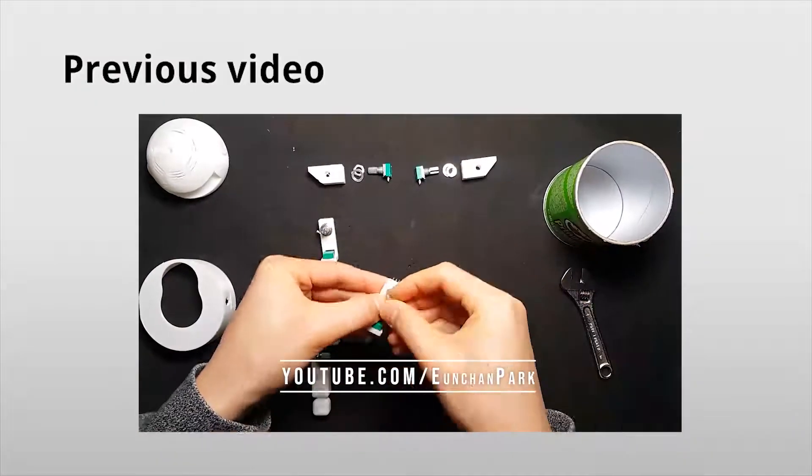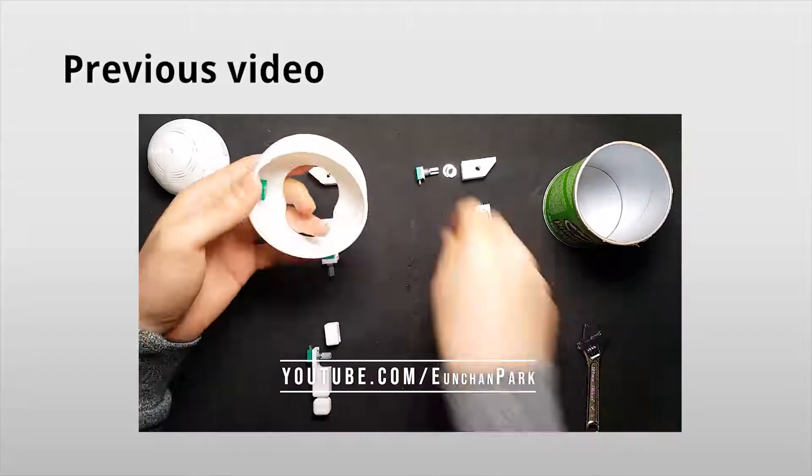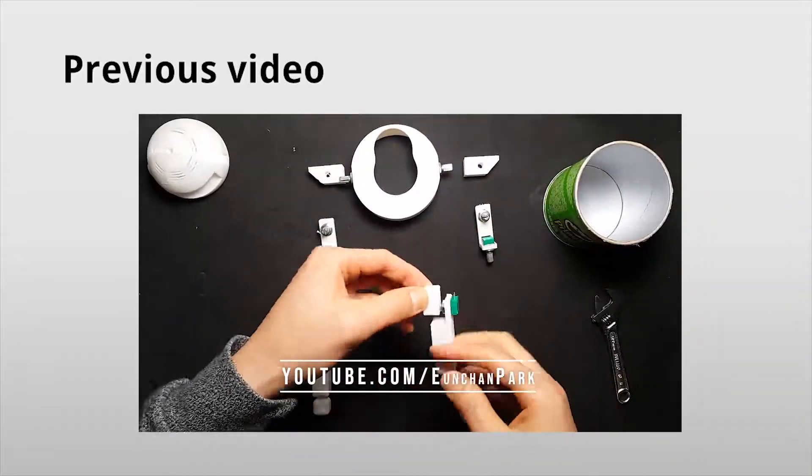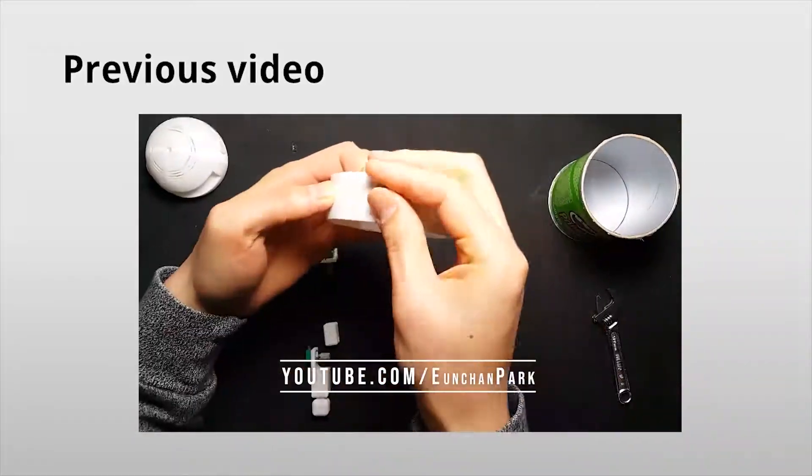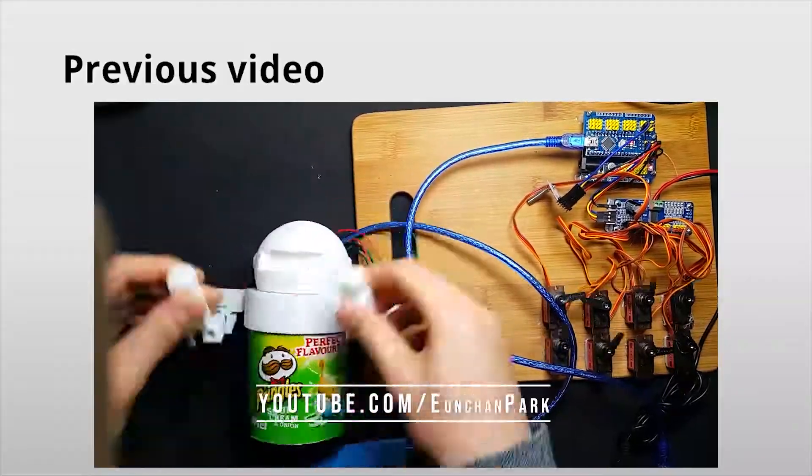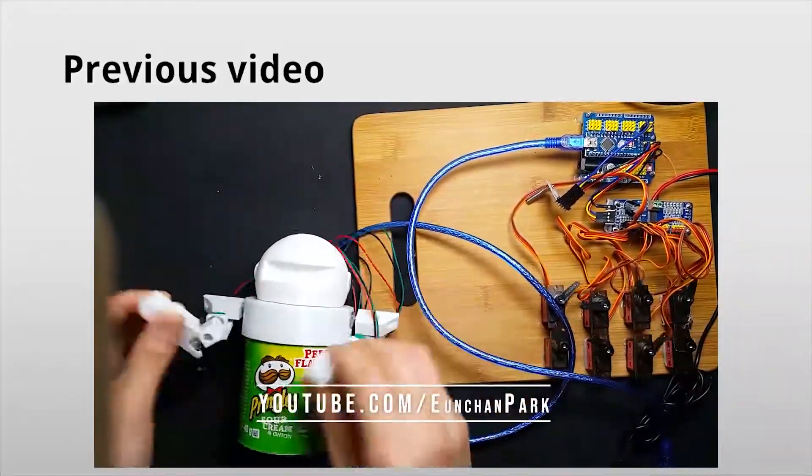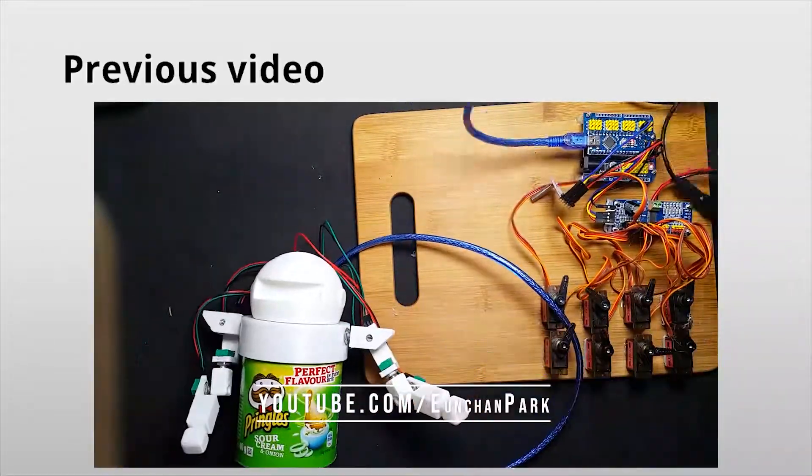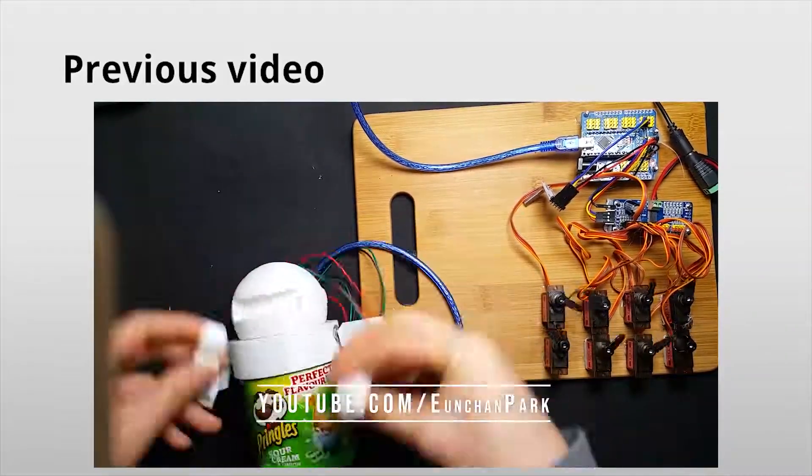In the previous video, we made the master robot which has 8 potentiometers. We printed all of the parts, assembled, and successfully tested. The robot sends its angle value through wireless signal via the HC-12 module.